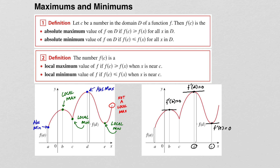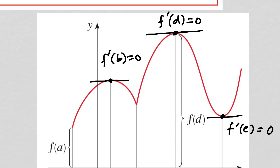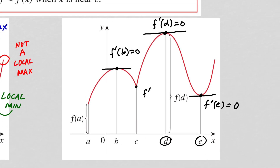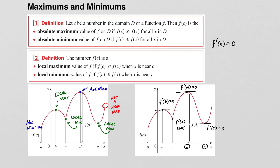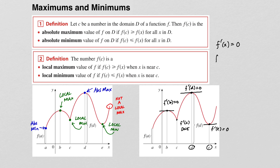So if we're looking for maximums and minimums, it seems we are interested in when f prime of x is zero. But also, at this point right here, f prime of c does not exist because it comes to a sharp point — the slopes of the tangent line from one side are not the same as from the other side. That point is also a local minimum. So when looking for local maximums and minimums, we look for when the derivative is zero and also when the derivative does not exist.